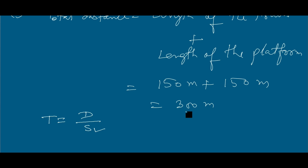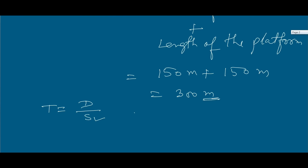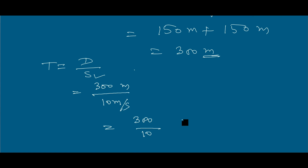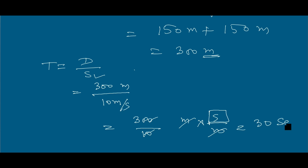Since the length unit is in meters, we use the speed in meters per second. Time equals 300 meters divided by 10 meters per second. The meter units cancel, giving 300 divided by 10 equals 30 seconds. So the train takes 30 seconds to cross the 150-meter platform.